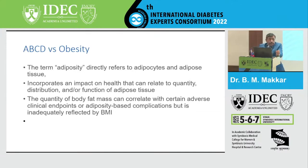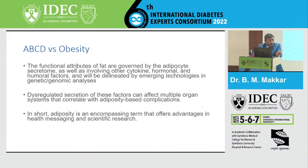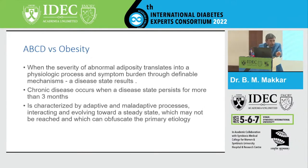When this abnormal function of adipose tissue happens, it ultimately translates into disturbed physiology and development of symptoms which define a disease. If disease persists for more than three months, it is called chronic disease. Once there is a chronic disease, the body gets into adaptive and maladaptive processes, ultimately achieving a steady state and leading to ongoing development of complications.